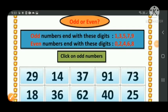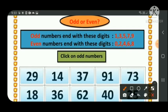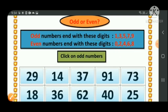Let's do some activities on odd and even numbers. The hint is already given: odd numbers end with digits 1, 3, 5, 7, 9, and even numbers end with digits 0, 2, 4, 6, 8. The question asks us to click on the odd numbers, so we need to check those numbers which have 1, 3, 5, 7, or 9 in the ones place.